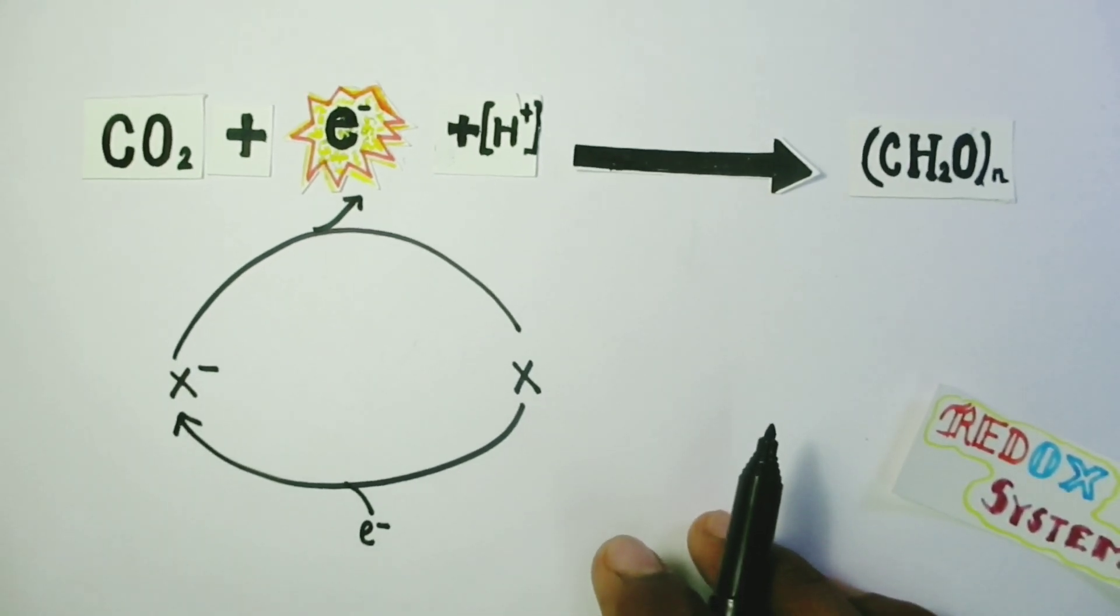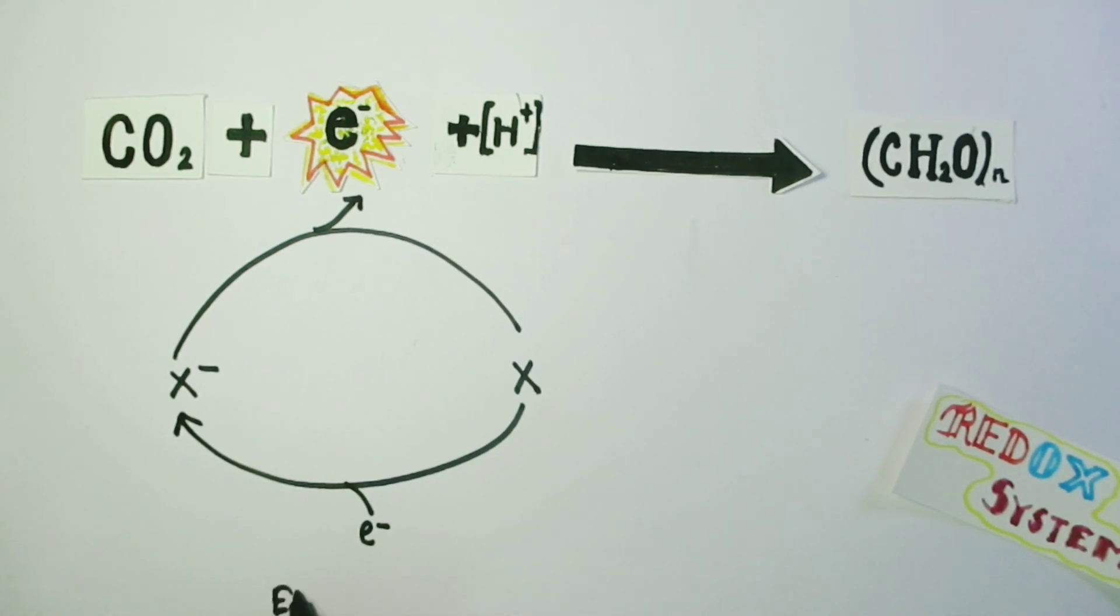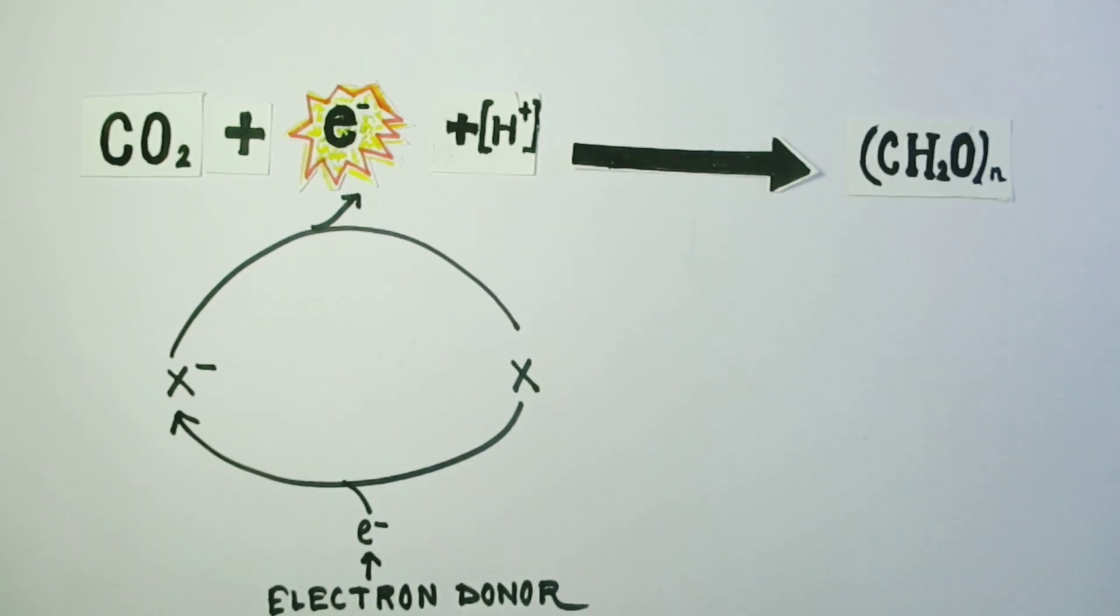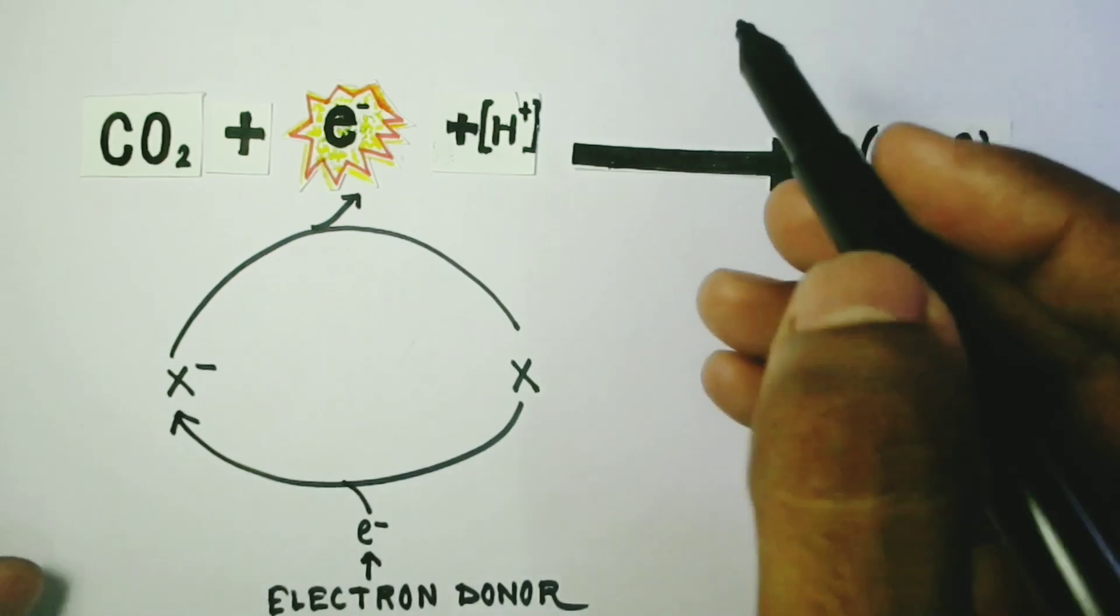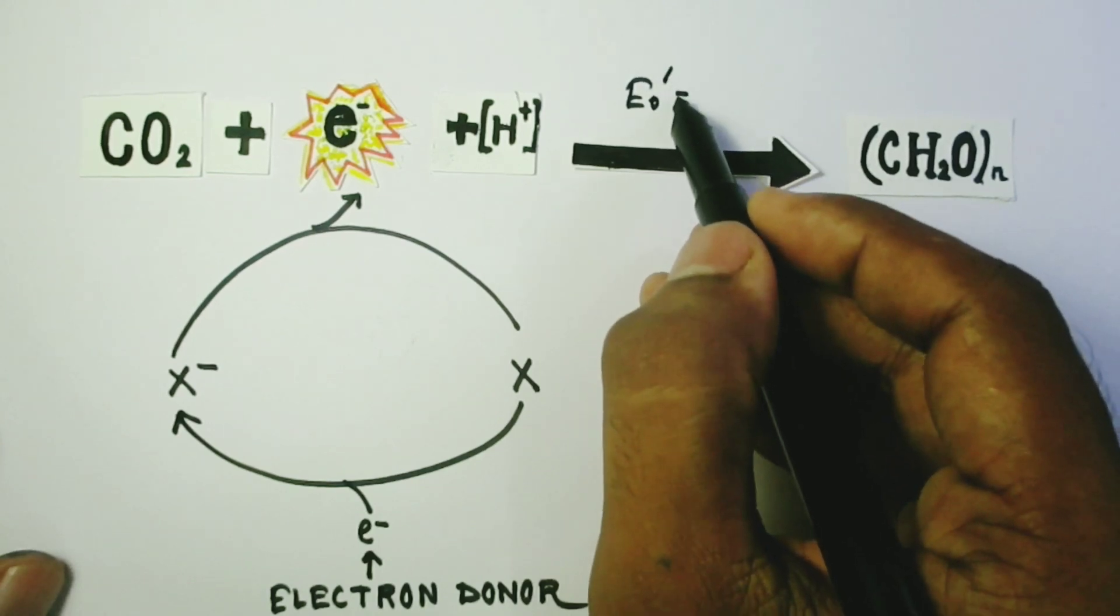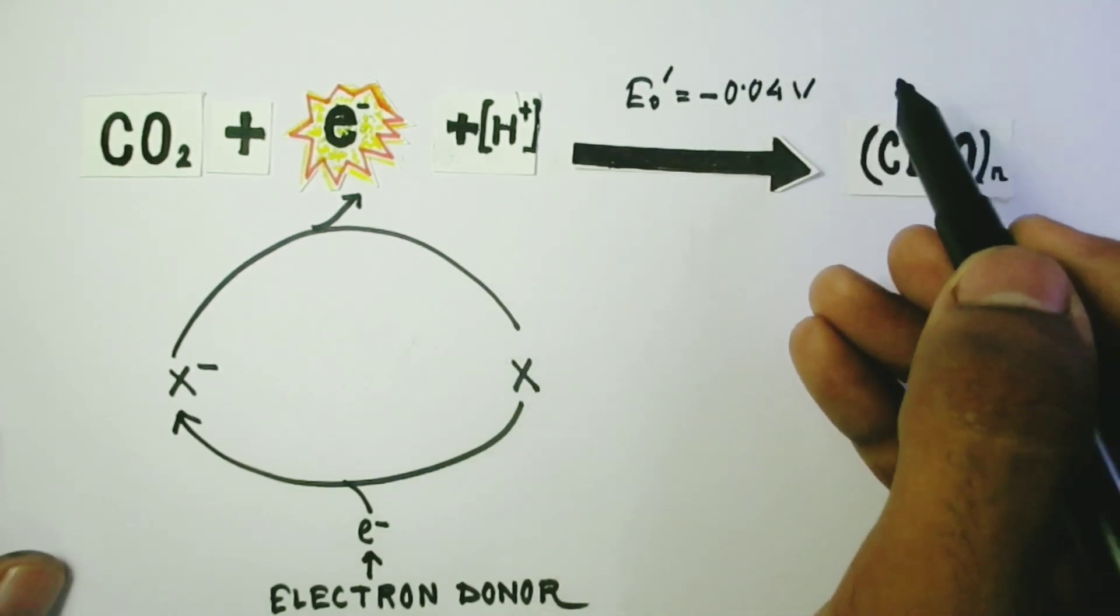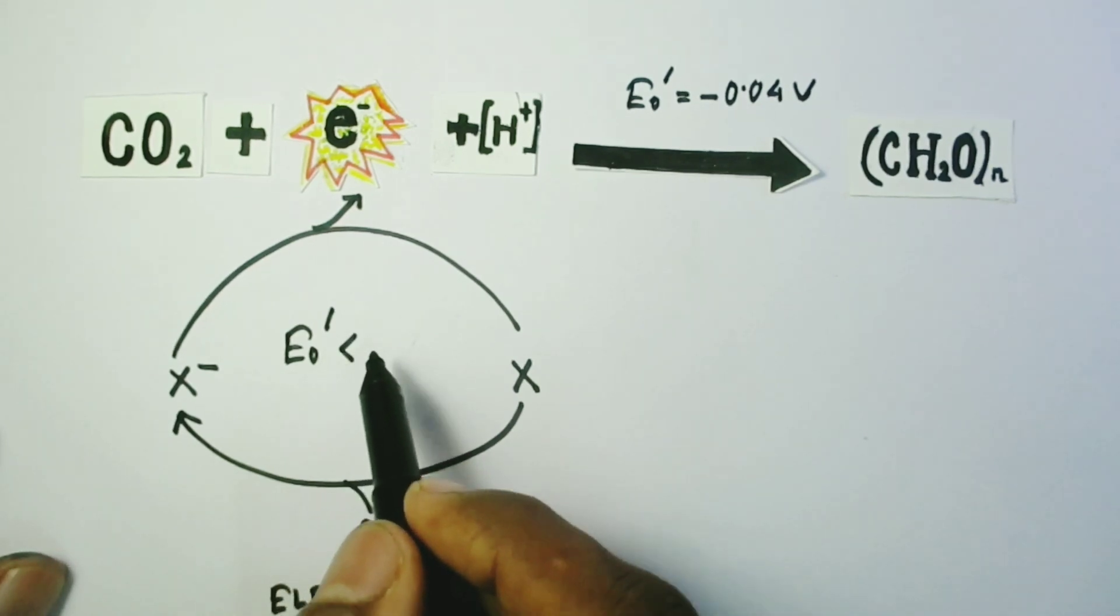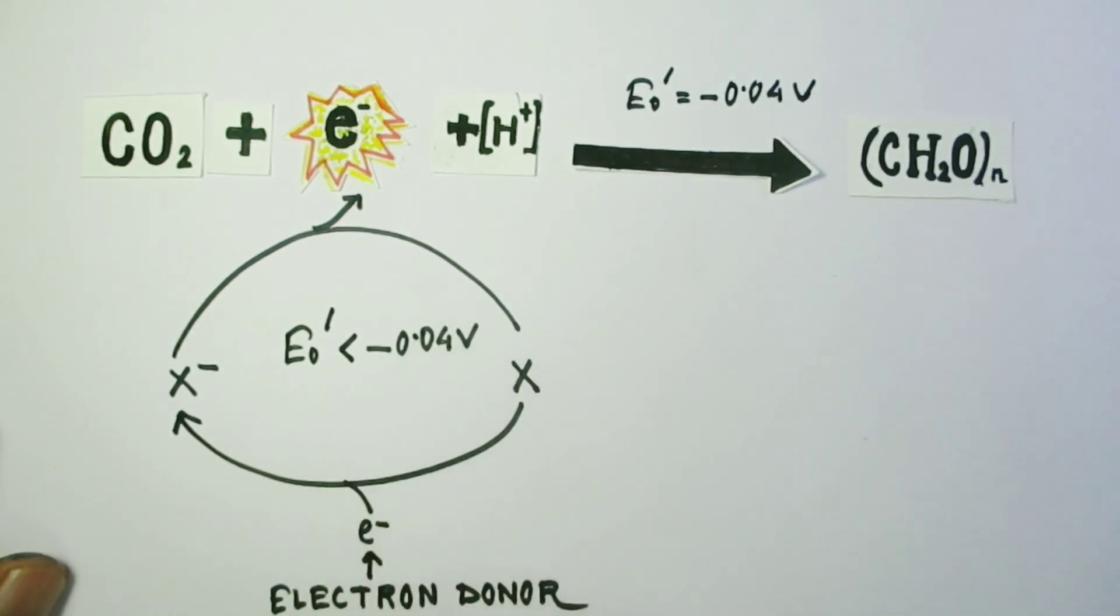This redox system may be called as electron donor. We may know that in case of photosynthesis, the electron donor is H2O. Please pay attention to certain information. In case of the reaction CO2 plus electron plus proton equals to CH2O n, the reduction potential or E0 prime is minus 0.04 volt. In order to donate electron into the system, the X minus X redox system must have an E0 prime value even negative than minus 0.04 volt, so that it can pass electron along the electrochemical gradient. And in case of electron donor, the E0 prime value must be even more negative than X minus X redox system.